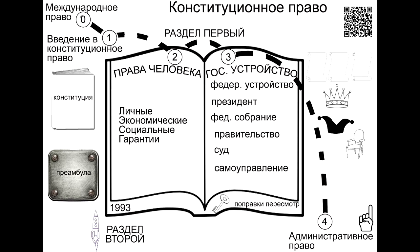Constitutional and legal norms and relations have a number of features: declarative, general, constituent, political, mainly imperative and truncated structure of norms, special subjects, composition, basic nature and specific mechanisms for implementing relations.